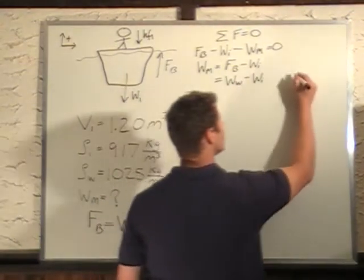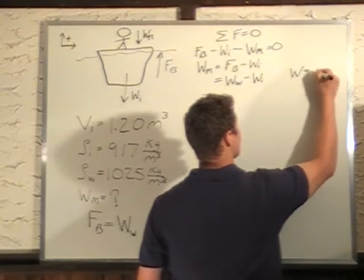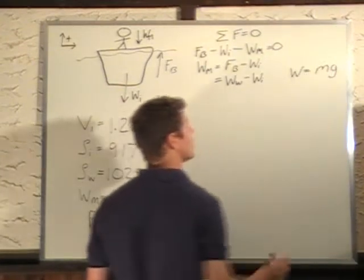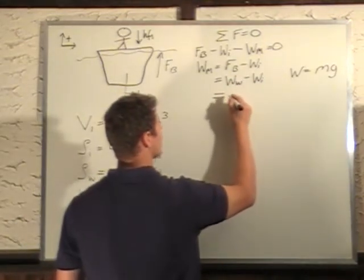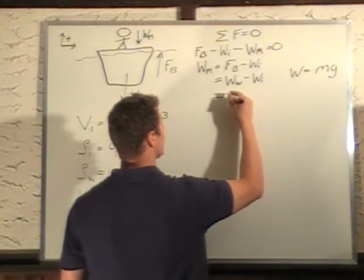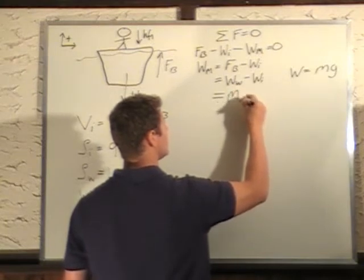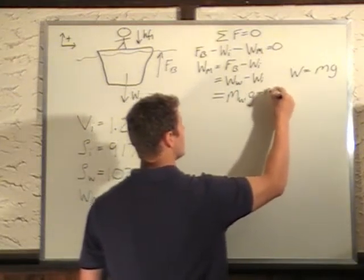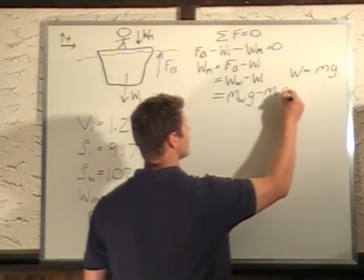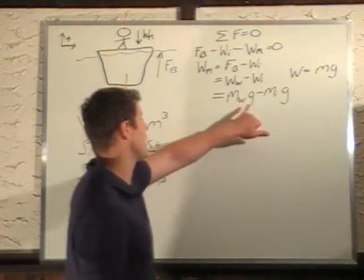So we know weight is equal to mass times gravitational constant. So we'll plug that in. We have weight of the water becomes mass of the water displaced times G, minus mass of the ice times G. Now all we have to do is figure out these masses.